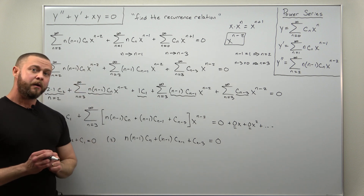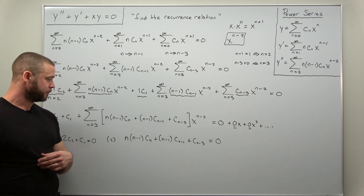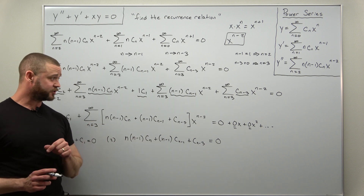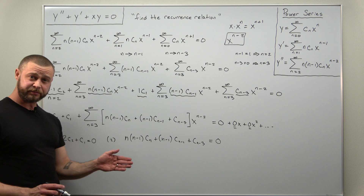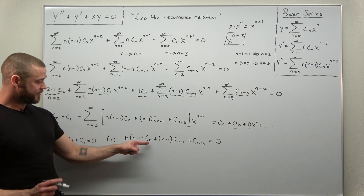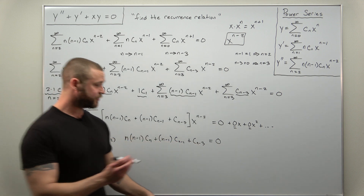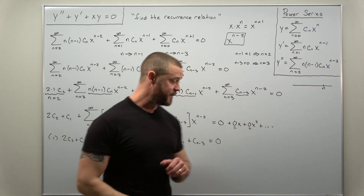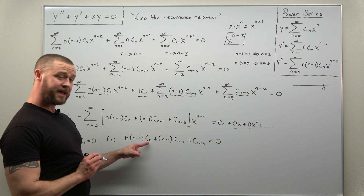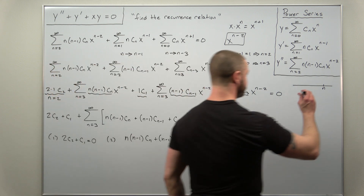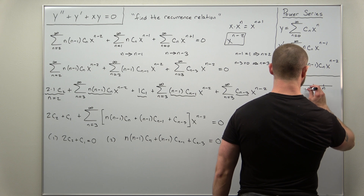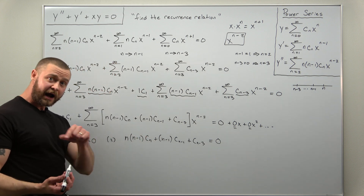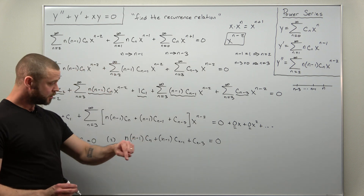From this, we get two conditions. The first condition is that the constant terms equal zero: two c sub two plus c sub one equals zero. The second condition — the recurrence relation — is that the bracketed coefficient equals zero for each power: n times n minus one times c sub n plus n minus one times c sub n minus one plus c sub n minus three equals zero. The highest indexed term here is c sub n, since n comes after n minus one and n minus three on the number line.